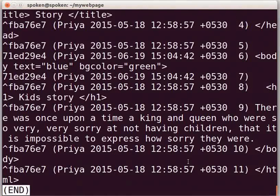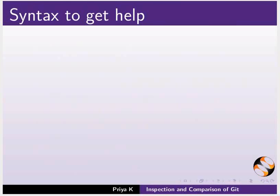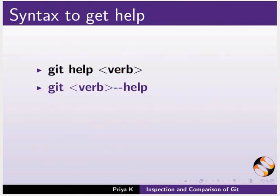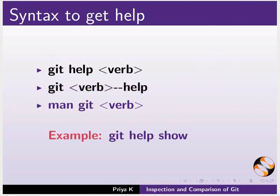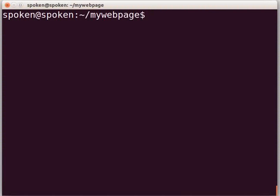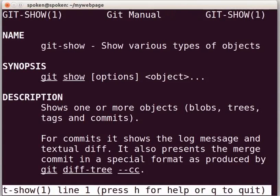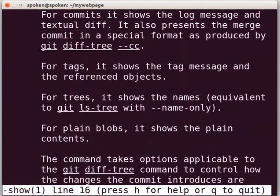Lastly, we will see how to get help from git. The syntax to get help is: git help <verb>, or git <verb> --help, or man git <verb>. For example, git help show. Switch back to the terminal and type git help show and press Enter. Here, we can see the manual of the show command.